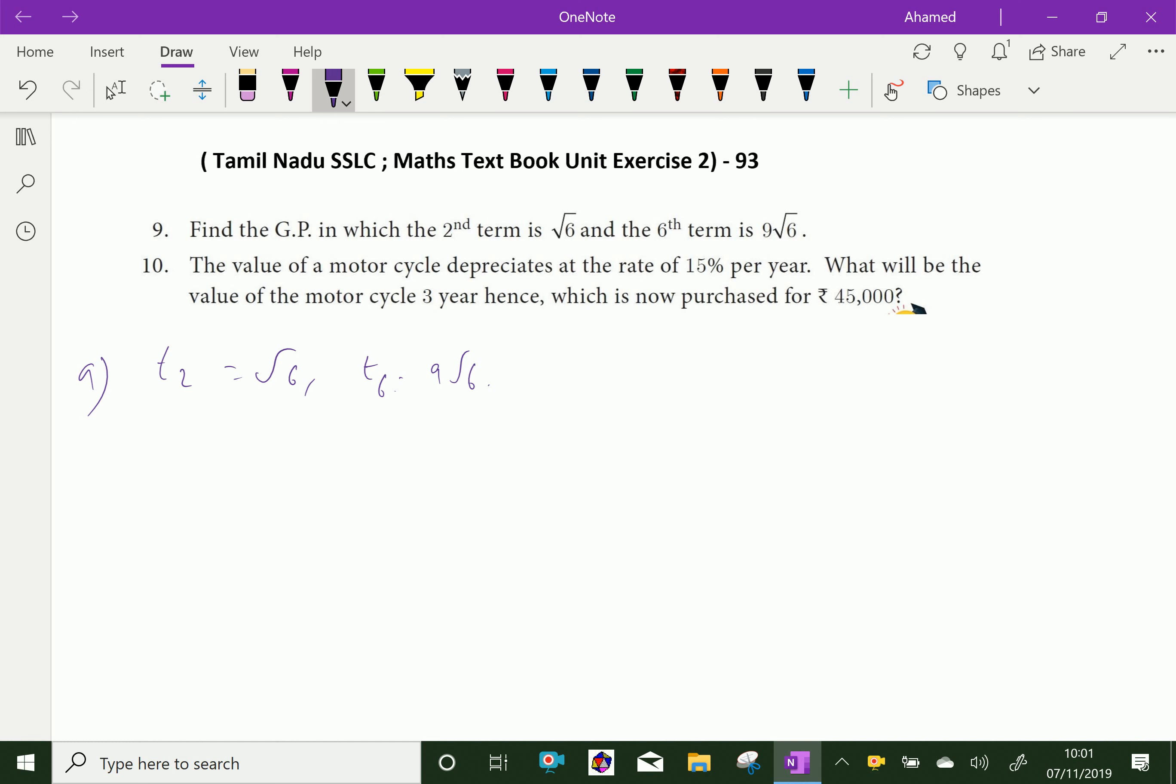For GP, nth term formula is ar^(n-1), where r is the common ratio and a is the first term.